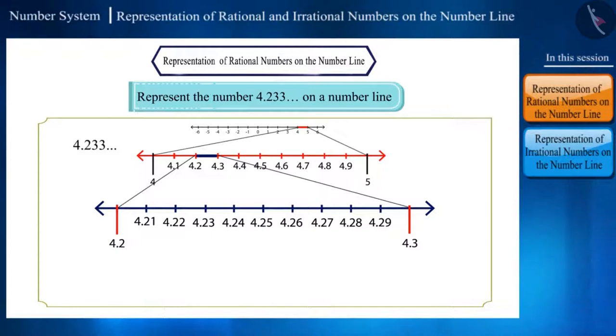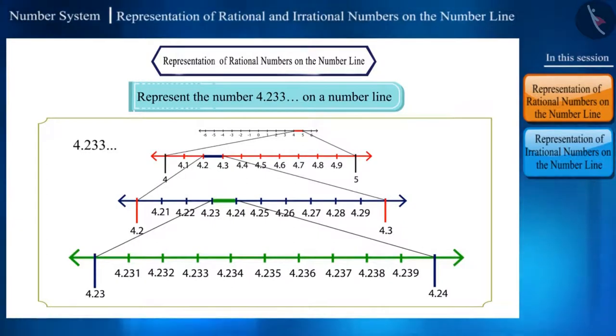Now we can say that the given number will lie between the numbers 4.23 and 4.24. Friends, to get more accurate visualization of the representation, we will further divide the range 4.23 and 4.24 into 10 equal parts.